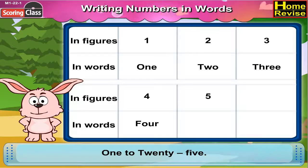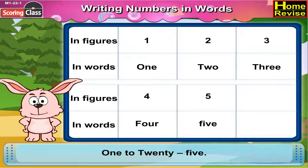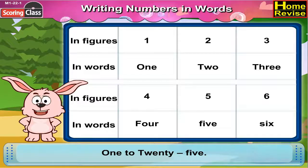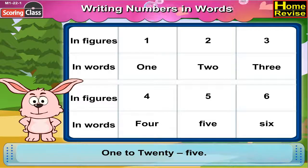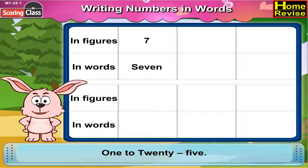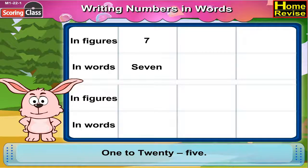5 in words is F, I, V, E. In figure it is like this. 6 in words is S, I, X. In figure it is like this. 7 in words is S, E, V, E, N. In figure it is like this.